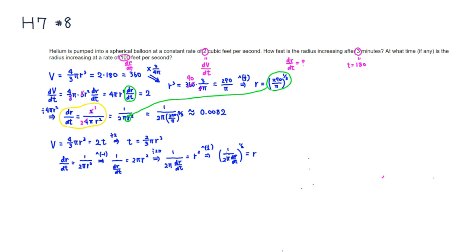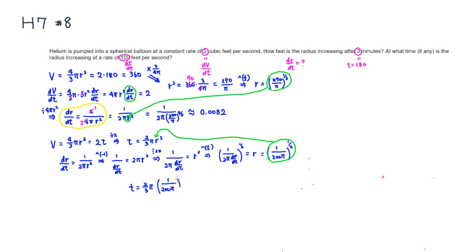Since dr/dt = 100, we get R = [1/(2 × 100 × π)]^(1/2) = (1/(200π))^(1/2). Now plugging this into t = (2/3)πR³: R must be cubed, so instead of the 1/2 power we use the 3/2 power, giving t = (2/3)π × (1/(200π))^(3/2).